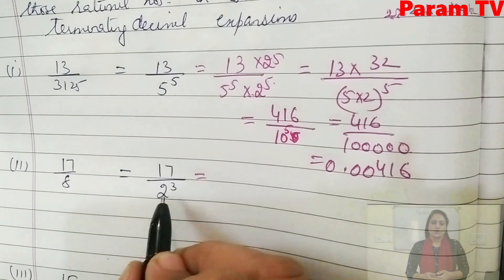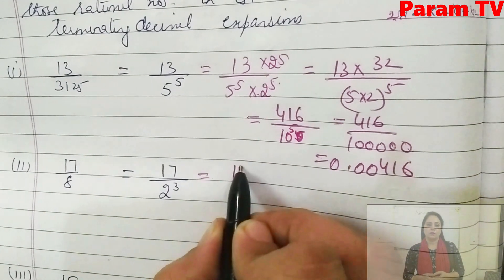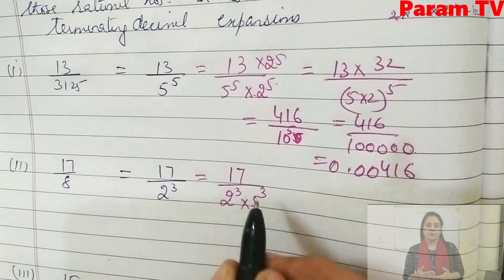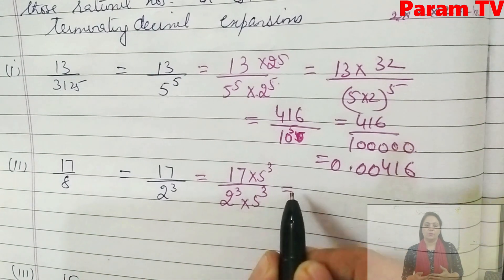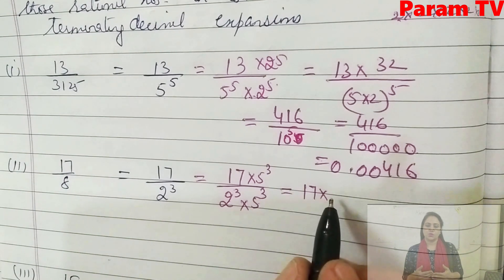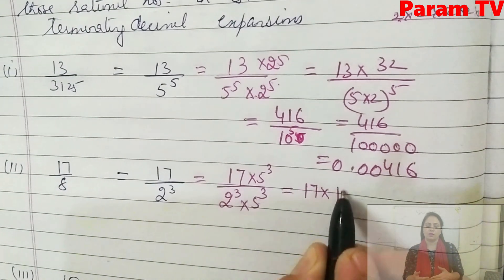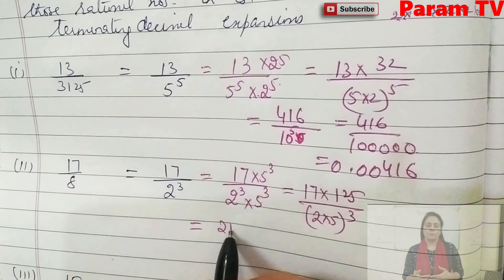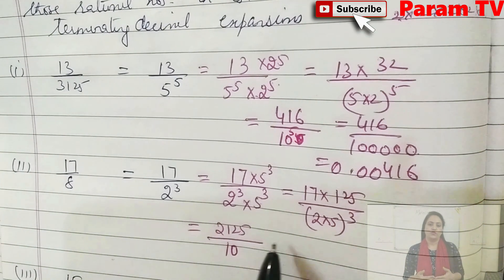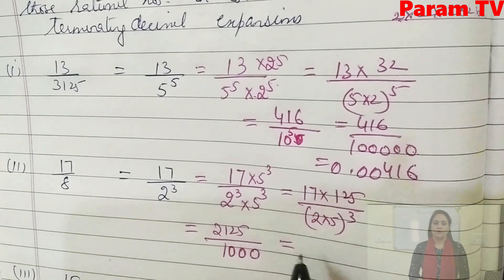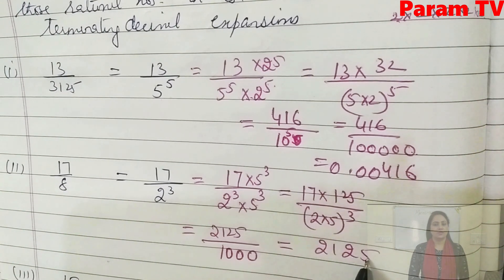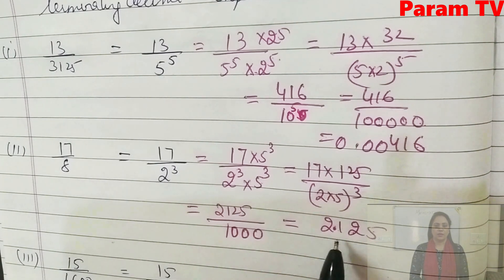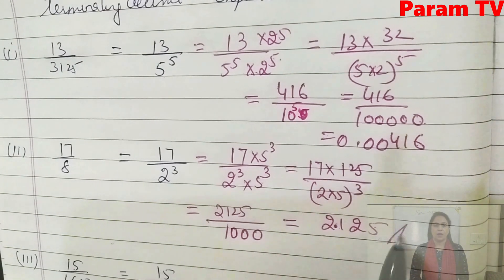Similarly, for the next terminating part — the denominator has 2³. We need to multiply by 5³ to make the denominator a power of 10. 5³ = 125. So the fraction becomes (numerator × 125)/(2³ × 5³) = 2125/10³. 10³ means 3 zeros, so count 3 decimal places from the right. That is the decimal expansion.